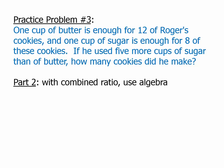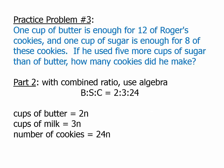All right. Now that we have the combined ratio, we're going to use algebra. And so, this means that the cups of butter are 2N. The cups of milk are 3N. And the number of cookies is 24N. So, if we found the value of N, we'd be all set. In other words, if we found N, we plug into that last equation and we're done. So, now we can use this very strange piece of information. He used five more cups of sugar than of butter.